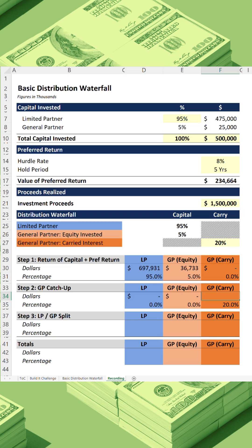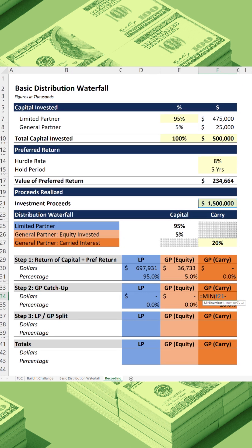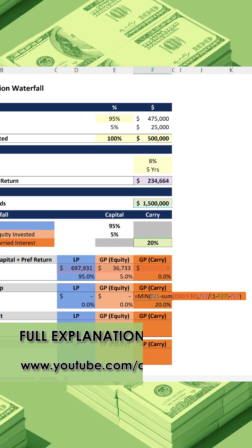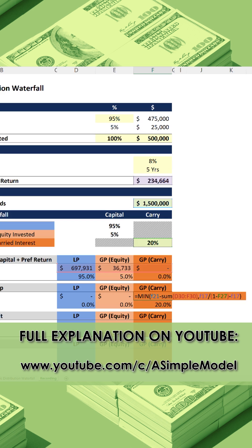For the calculation of carry, we're going to again use the MIN function to make sure we have enough proceeds. So we take total proceeds and then subtract distributions made so far. Next, we calculate the value of the carry: we take the value of the preferred and divide by 80% — or 1 minus 20%, same thing — and then subtract the value of the preferred. This gives us the value of the catch-up. I have details on how this works on YouTube, but we don't have time in this quick build video.